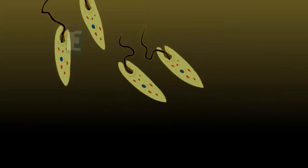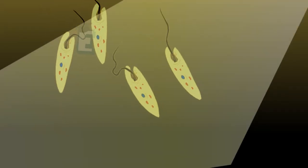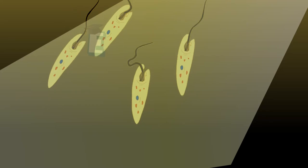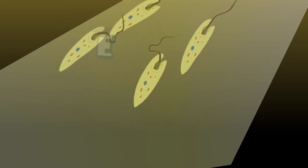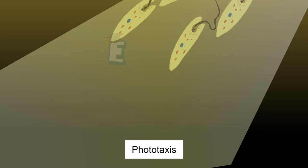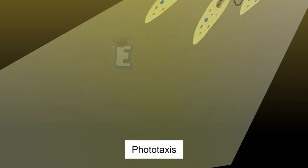One example is the euglena. Euglena will move towards the source of light by using its whip-like appendages. Plant movement as a response to light as found in euglena is called phototaxis.